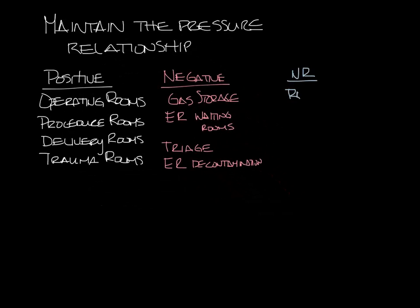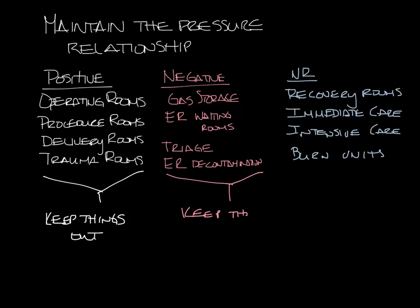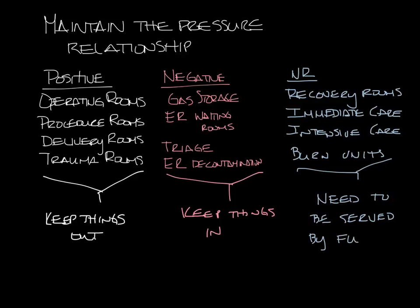There are also some areas that have no pressurization requirement, such as recovery rooms, immediate care areas, intensive care areas, and burn units. Table 7.1 is three pages long so there are a lot of other areas not on this list, but you get the idea of what types of spaces are kept positive or negatively pressurized. You can see that operating rooms are positively pressurized to keep things out of the space, and gas storage is negatively pressurized so that if something happens in the space the gas doesn't get out. There's also a statement in ASHRAE 170 that says recovery rooms, intensive care areas, immediate care areas, and burn units do not require pressurization relationships to adjacent areas, but they do need to be served by a fully ducted return or exhaust system.